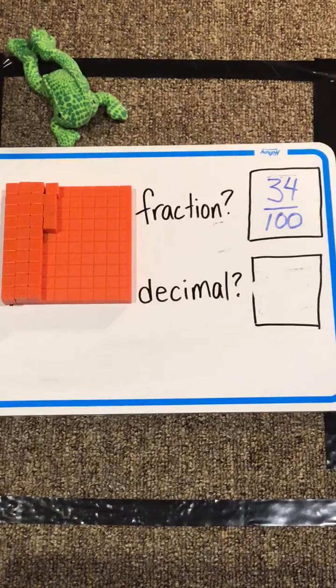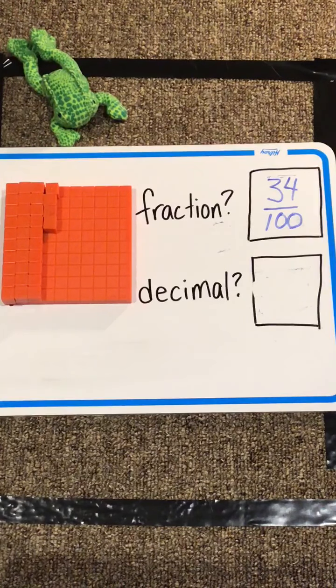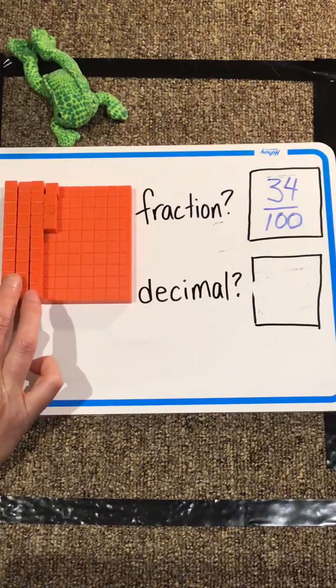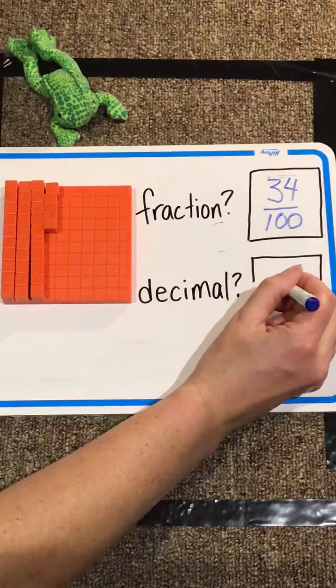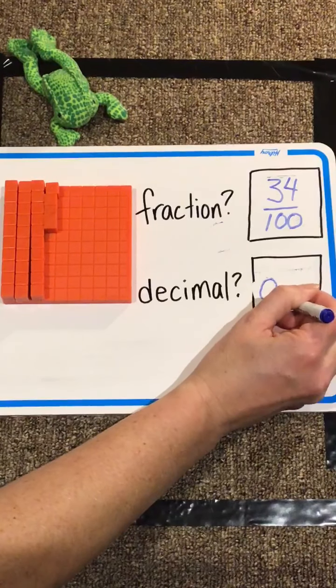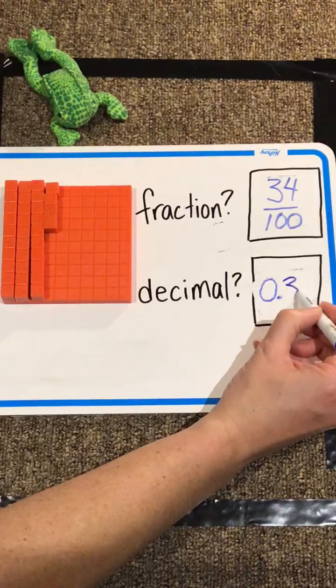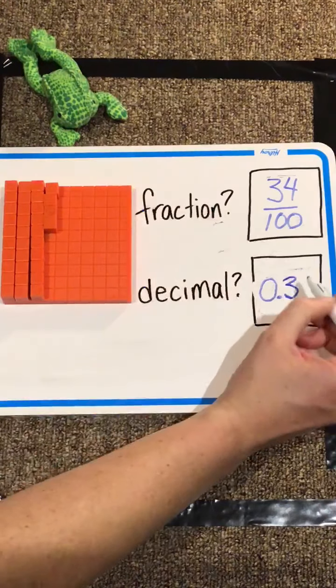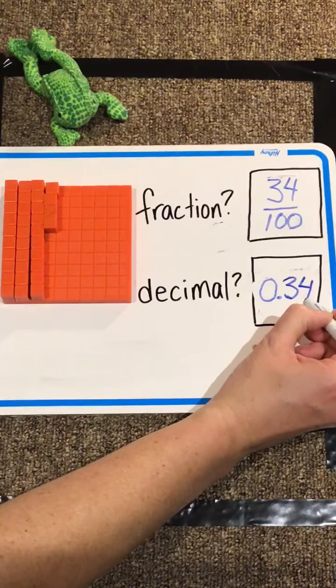We go to write the decimal, we can do it two ways. One is, we know that each of these ten sticks is one-tenth. There's three of them. So there needs to be a three in the tenths column. And then as leftover little hundredths, there are four of those.